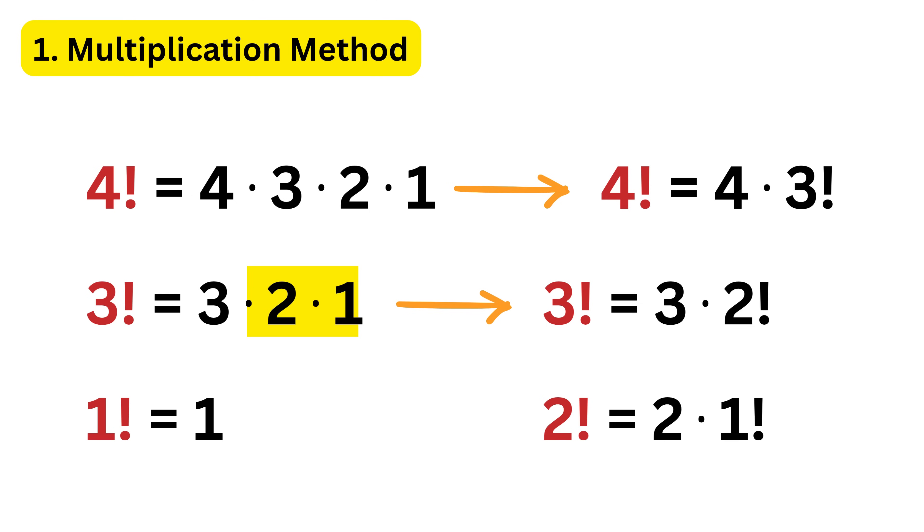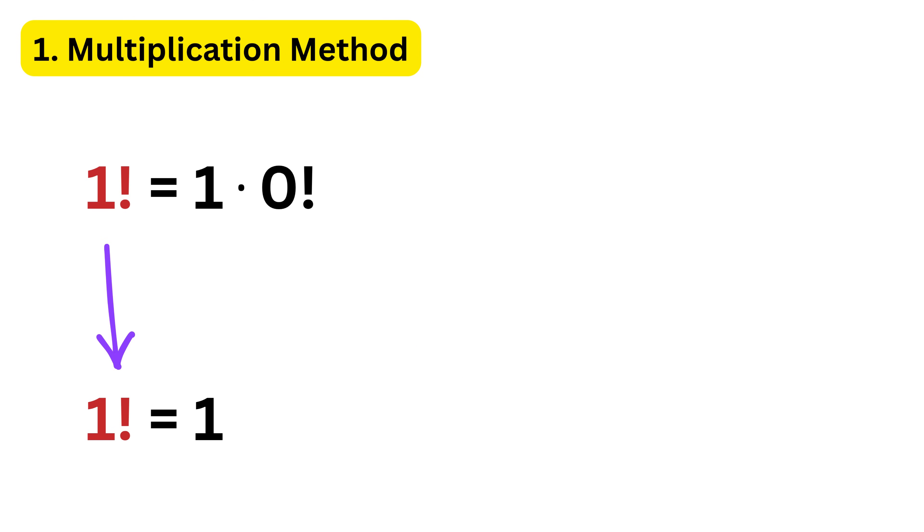Two factorial is two times one factorial, and one factorial is one times... yes, correct, it will be one times zero factorial. But look here, we have one factorial as one. So for this equation to be true, zero factorial has to be one.